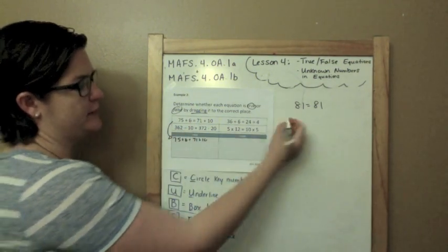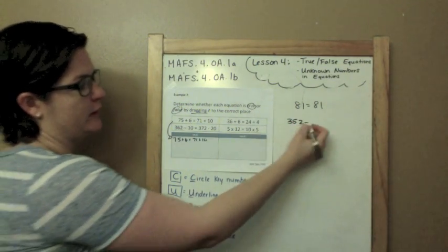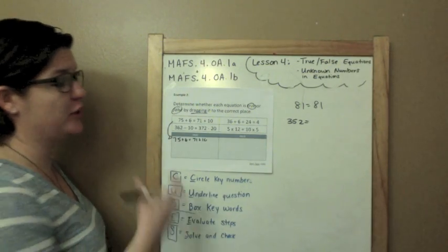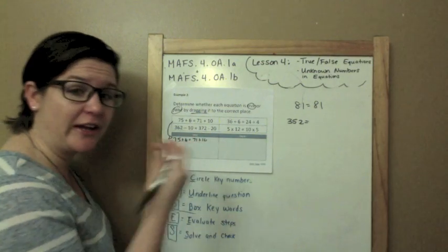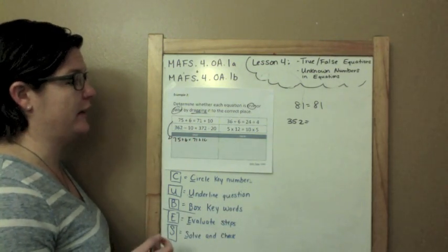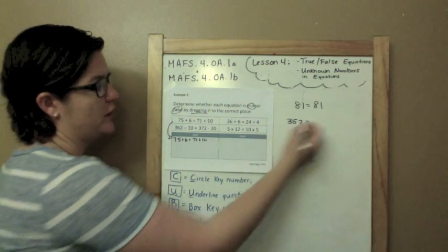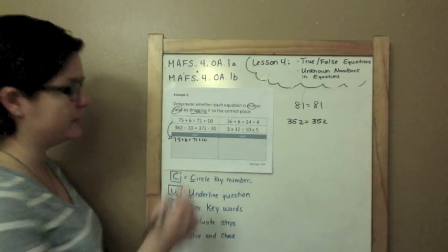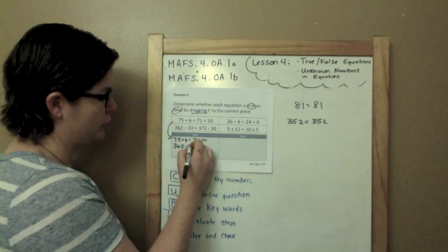Okay, 362 minus 10 would be 352. And maybe you have to write this out. Maybe you have to, while you're solving it, think about it and write it down. That's totally fine. For me though, I can do it in my head. 372 minus 20 would be 352. So both sides are correct. So that goes into our true column.